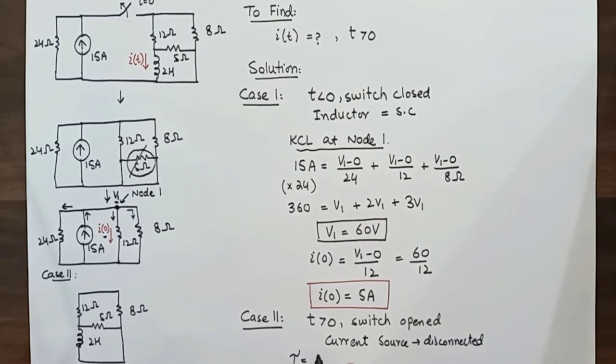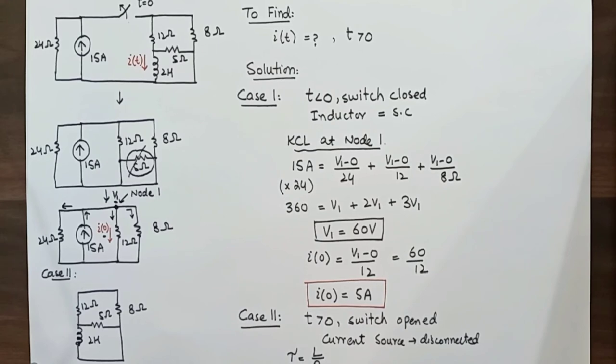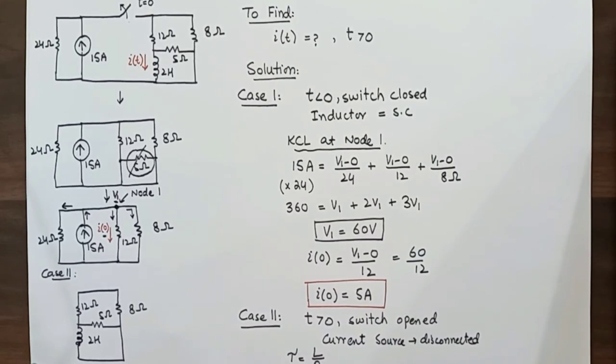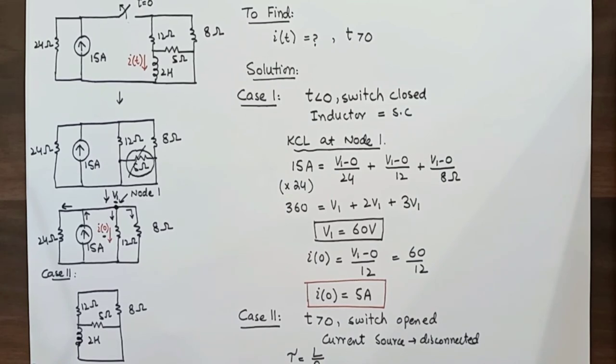The time constant tau for the inductor is L over R and R here is R equivalent. We can see this 12 ohms and 8 ohms resistance are in series. So add them which equals 20 and this 20 and 5 ohms resistances will be in parallel. So their parallel combination will give us 4 ohms resistance. So R equivalent will be equal to 4 ohms.